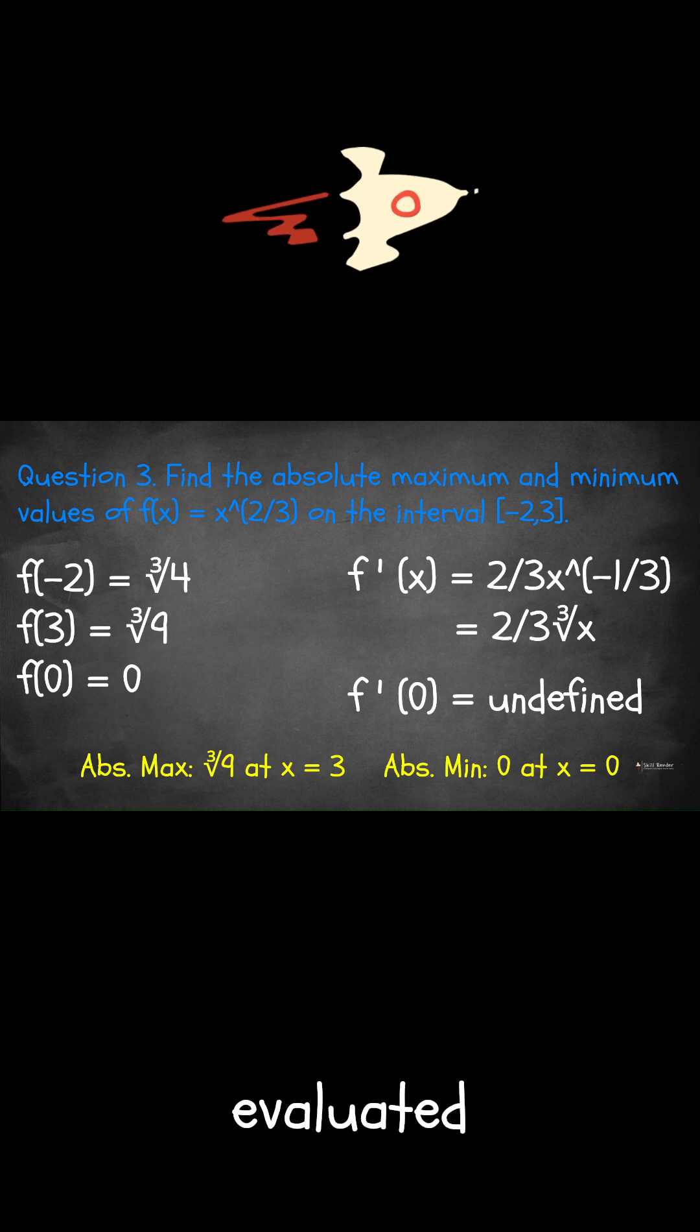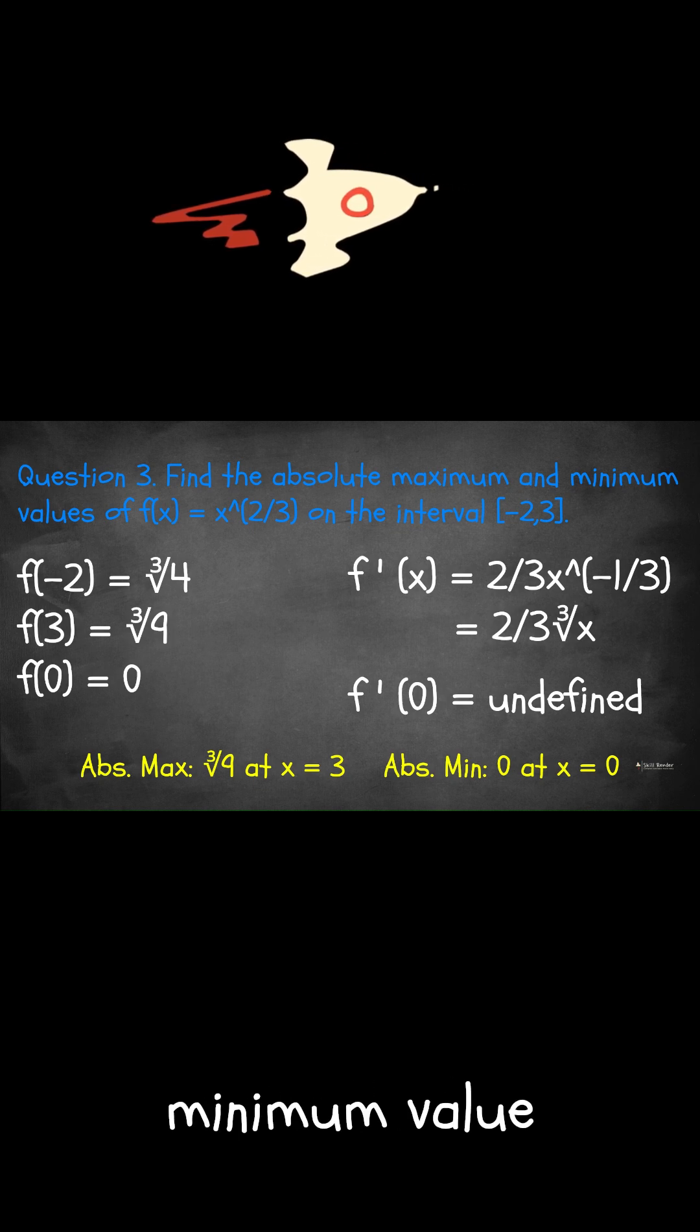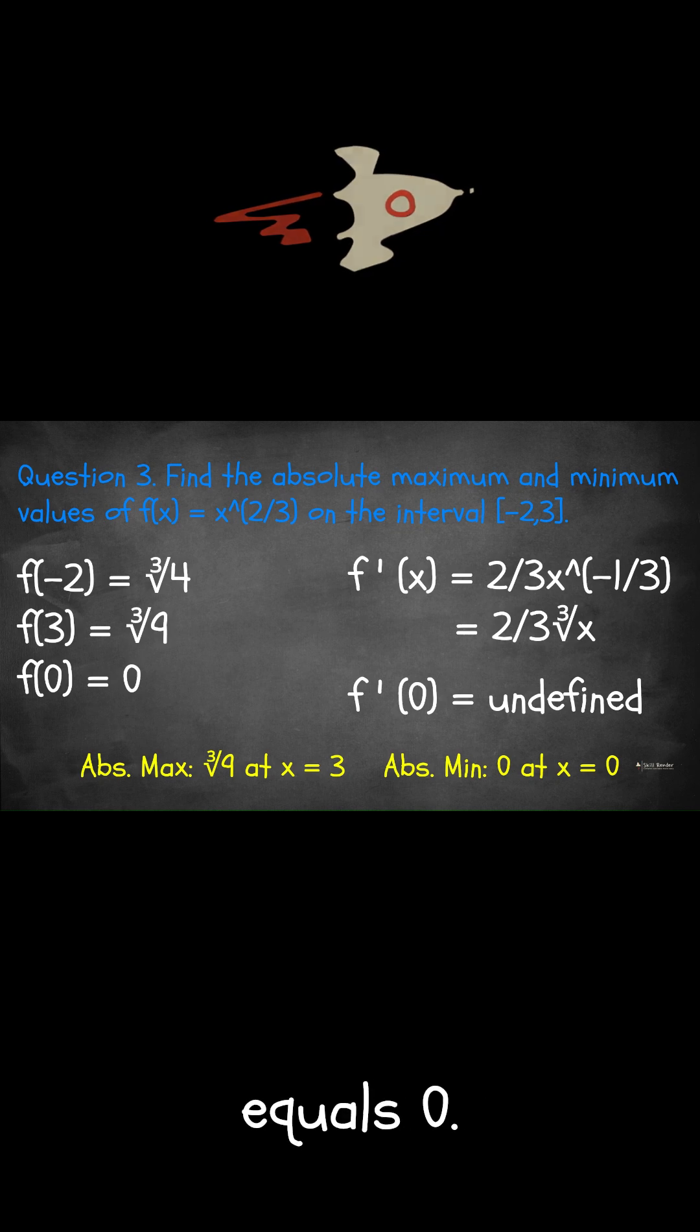And taking the smallest evaluated number, the absolute minimum value is 0 when x equals 0.